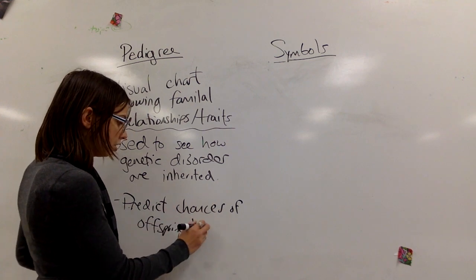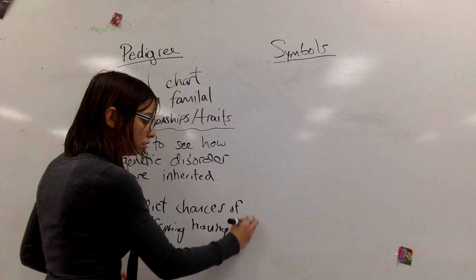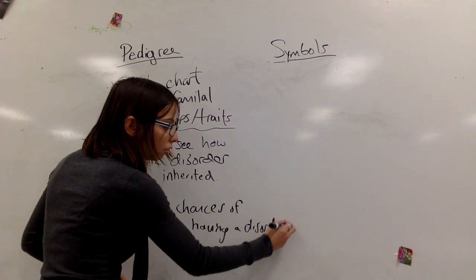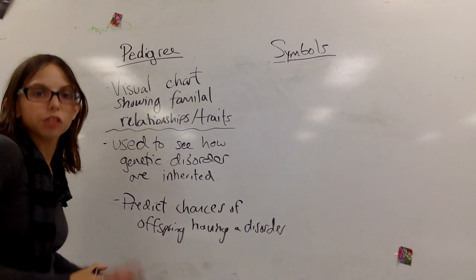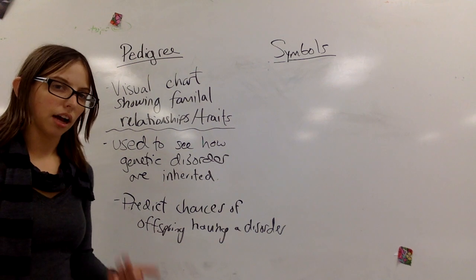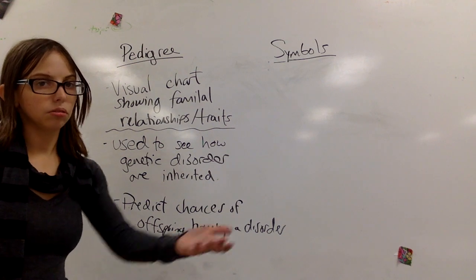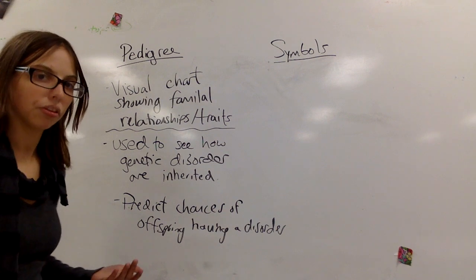It will predict the chances of an offspring having a disorder. So I want to know, do I run the risk, do I run a 50% risk of having a child that will have a potentially fatal disorder or a 25% chance? That's going to make a difference to me.